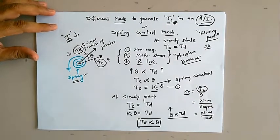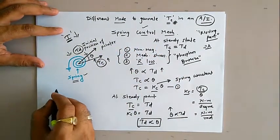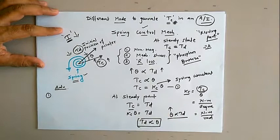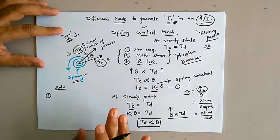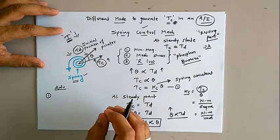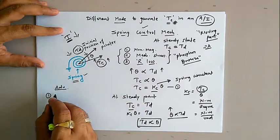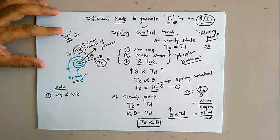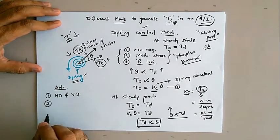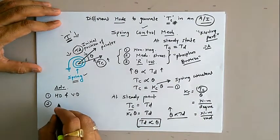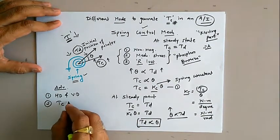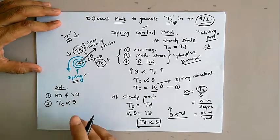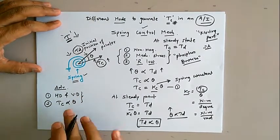Now let us analyze the advantages of spring control mechanism. Advantage number one: this type of mechanism can be implemented in any analog instrument irrespective of its position — we can use it in horizontal dial setting as well as vertical dial setting instruments. Advantage number two: from equation 1, the magnitude of controlling torque is proportional to theta, meaning it varies linearly with respect to theta, which is very important. These are the two advantages of spring control mechanism.